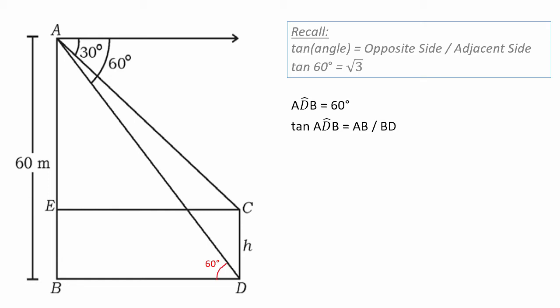Next, tan ADB equals the opposite side AB over the adjacent side BD. Since angle ADB is 60 degrees, we have tan 60 = 60 divided by BD.